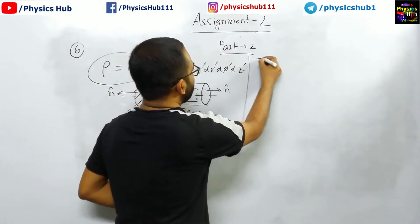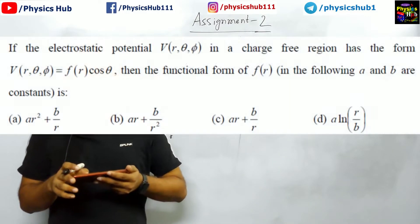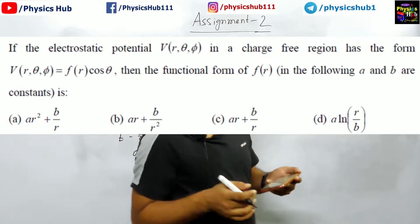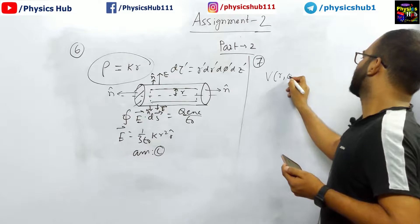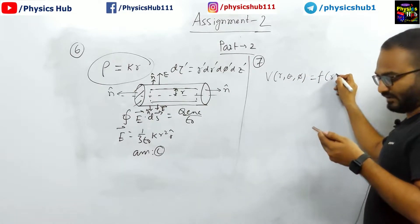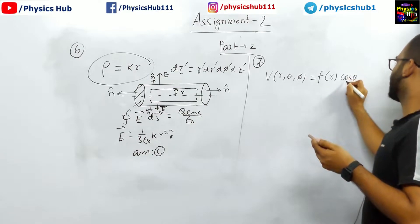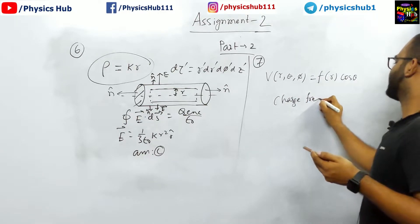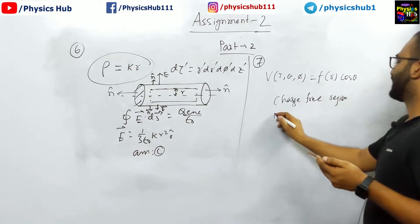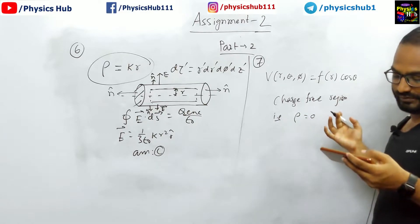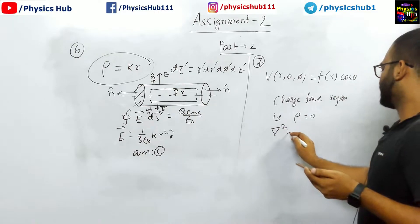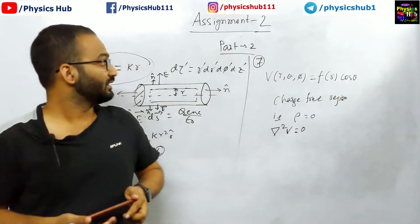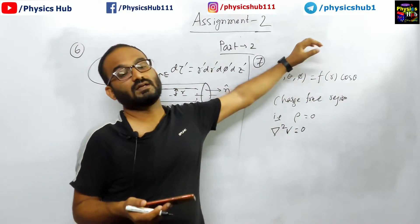Let us move to question number 7. If the electrostatic potential V(r, θ, φ) in a charged region has the form V = F(r)·cosθ, we need to find the functional form of F(r). This is a charge-free region, meaning the volume charge density ρ equals 0. Therefore, instead of Poisson's equation, we use the Laplace equation: ∇²V = 0. We express ∇²V in spherical polar coordinates since r, θ, φ are spherical polar coordinates.